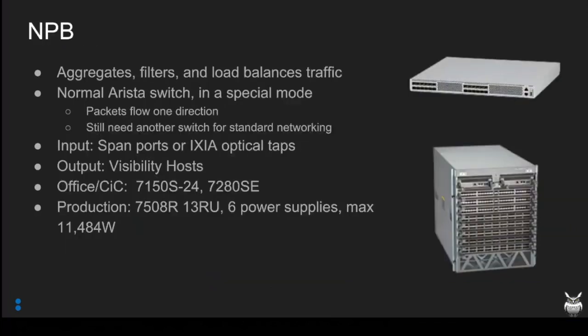A network packet broker, for those who aren't familiar, is going to aggregate, filter, and load balance traffic from multiple taps and span ports, then load balance across different tools. We use two main styles of Aristas: pizza boxes — the 7150s and 7280s — for office and CIC locations. The 7280s have 100-gig ports which can be used for 40-gig. The 7150s are mostly 10-gig. For production, we use the big box.